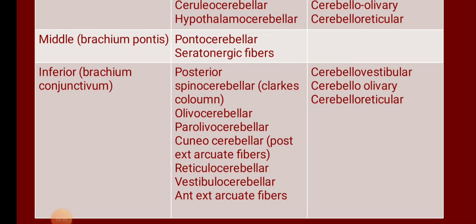Imagine a cut section of the medulla. In that section you find the inferior olivary nucleus, which has a crumpled bag appearance. The fiber starting from that nucleus is termed olivocerebellar — the second afferent fiber. Close to the olivary nucleus is the accessory olivary nucleus, from which you get the next fiber: parolivocerebellar. So: posterior spinocerebellar, olivocerebellar from the inferior olivary nucleus, and parolivocerebellar from the accessory olivary nucleus.